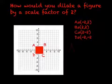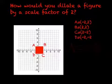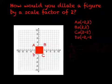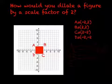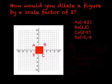So A would equal negative 4, 4, and then B would equal 4, 4, C would equal 4, negative 4, and D would be negative 4, negative 4.